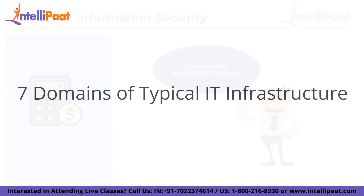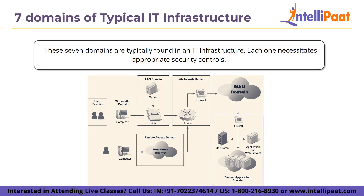Now let's move on to the seven domains of a typical IT infrastructure. Most IT infrastructures, whether in a small business, large government agency, or publicly traded corporation, include the same domains. In this figure you can see: the user domain, workstation domain, LAN domain, LAN to WAN domain, remote access domain, and system or application domain. These seven domains are typically found in an IT infrastructure and each one requires appropriate security controls. These controls must address the CIA triad — confidentiality, integrity, and availability.